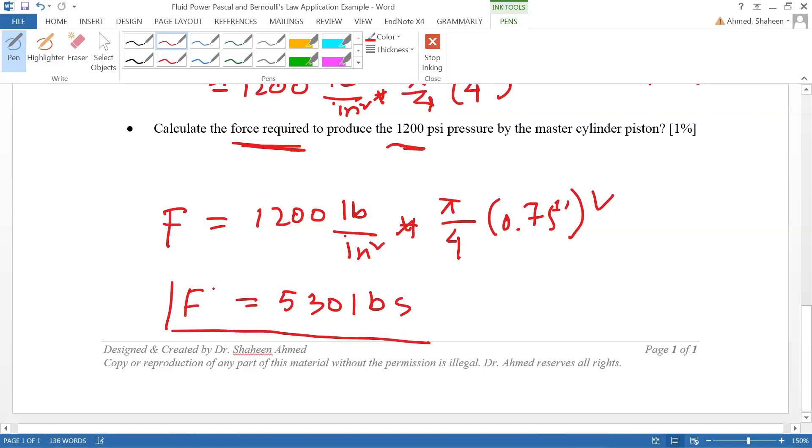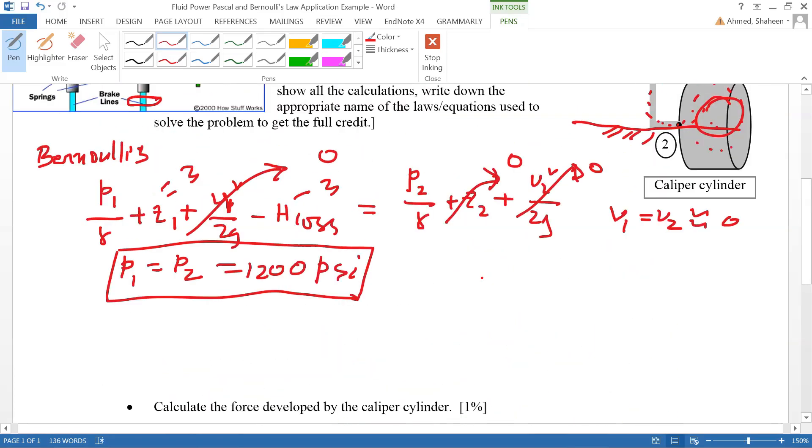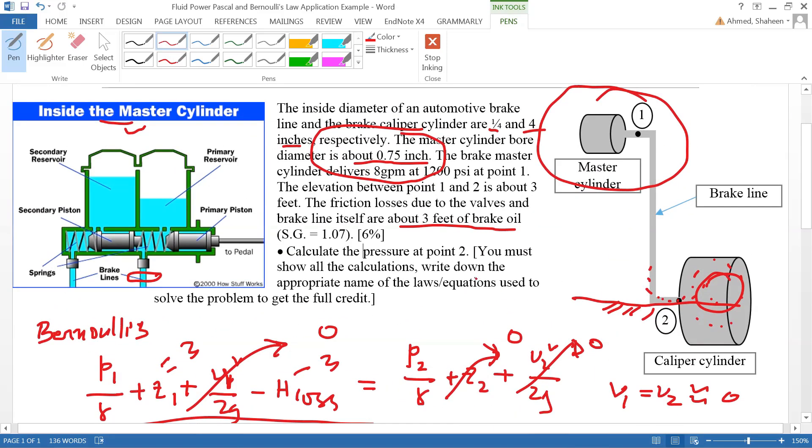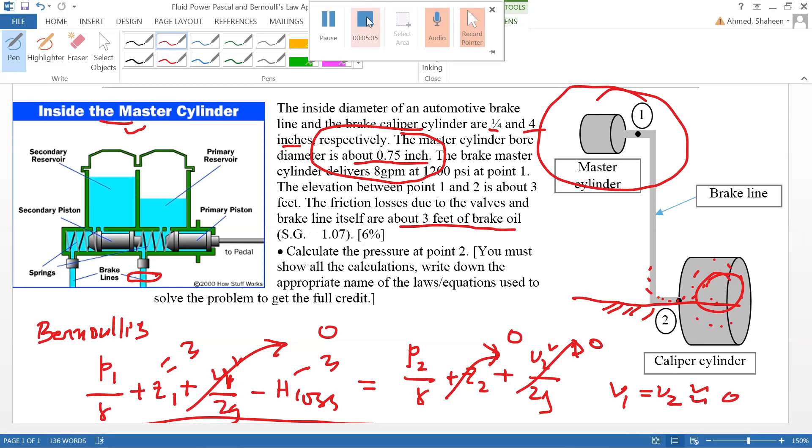Now this is not what is required by the driver's foot, because between the master cylinder and driver foot you have a brake booster and the brake lever which multiply the forces. So you need about 50 to 100 pounds of force from the feet, or even less depending on the car. It's only 530 pounds required by the master cylinder to produce that 1200 psi pressure.